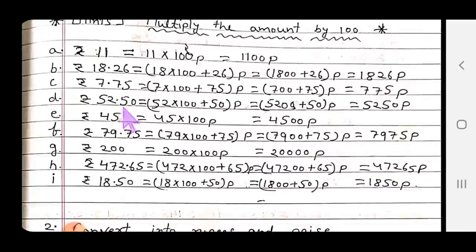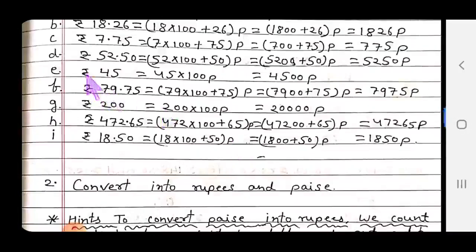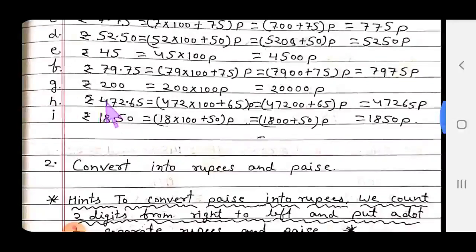Question d: 52 rupees 50 paise. Multiply 52 by 100 to convert to paise, plus 50 paise. That equals 5250 paise. Question e: 45 rupees, simply multiply by 100 paise, you get 4500 paise.